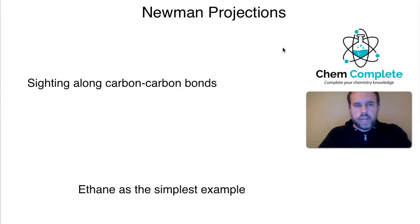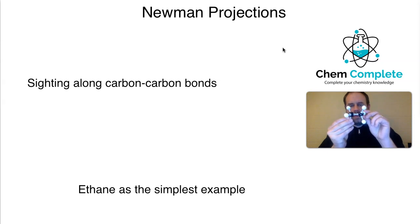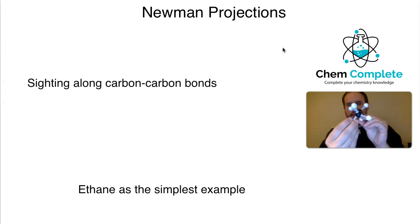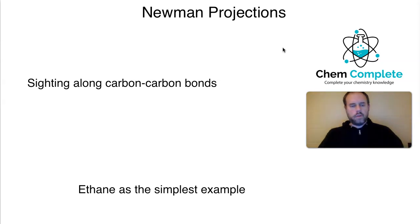Newman projections are a situation where we can look at an organic molecule and evaluate it by looking at its carbon-carbon bond. Instead of viewing it from the side perspective like we normally would, we are going to sight down the bond and look at it from a head-on perspective.